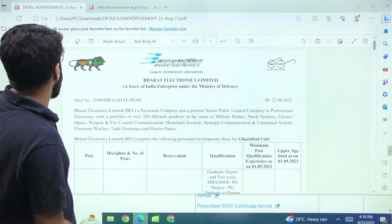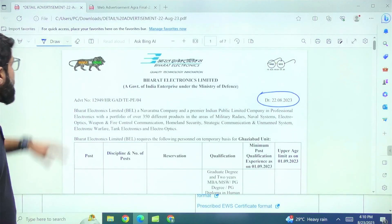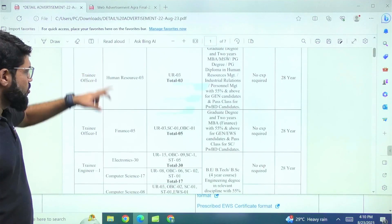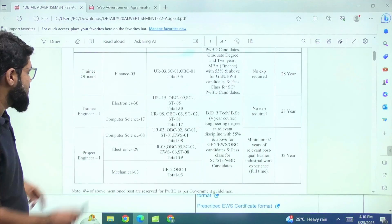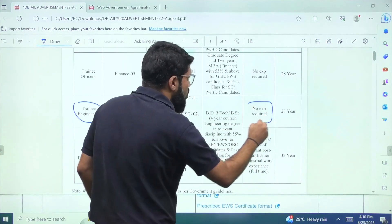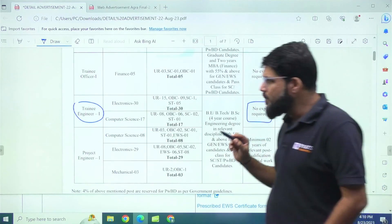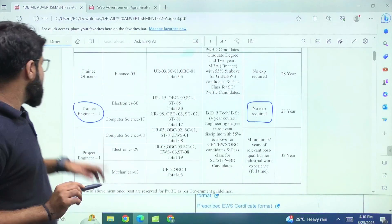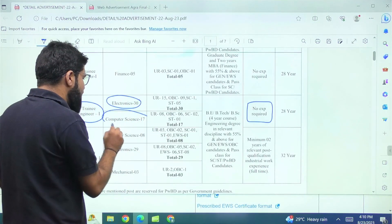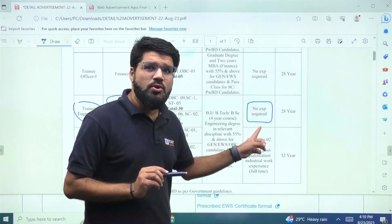One is for the Agra location and one is for the unit at the Ghaziabad location. You can click here to see the advertisement. I've opened it already for you separately. So let's talk about this one, which is floated yesterday, that is 22nd of August. And there are the posts here. Let's come to the engineering post. There are some HR and finance based posts. Look into this the trainee engineer, where there is no experience required.